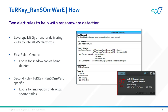Further to that, and specifically related to Turkey Ransomware, the second rule focuses on the fact that the ransomware aims to encrypt specifically desktop shortcut files. By monitoring for this attempted encryption, we can again provide a potential early warning system for security teams.